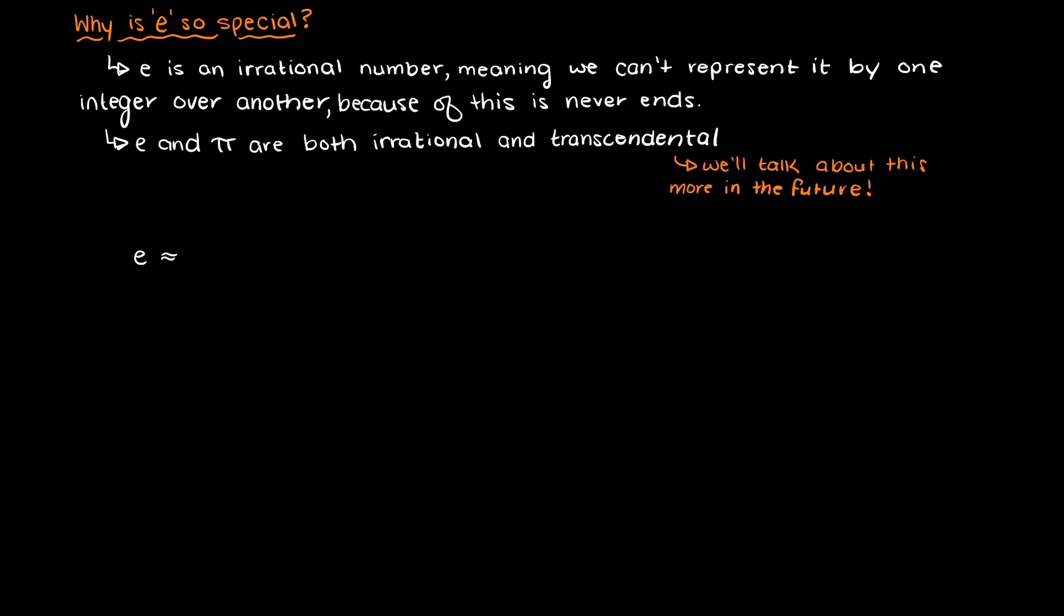It is defined as 1 plus 1 over n, all to the power of n. n can be any value, however, the larger n we pick, the more accurate our approximation of the irrational number will be.